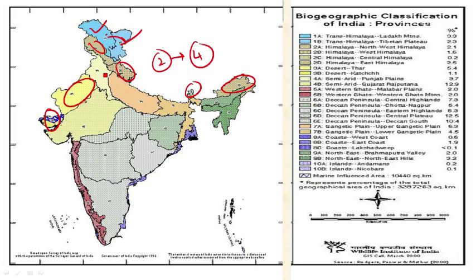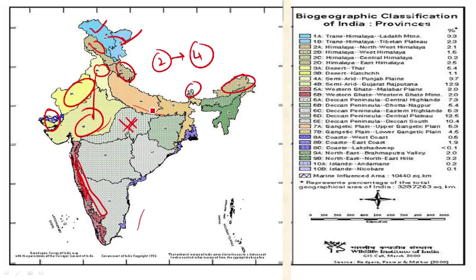The Semi-arid zone is divided into two provinces: the Punjab Plains and the Gujarat-Rajputana province. The Western Ghats zone is divided into two provinces: the Western Ghats Malabar Plains and the Western Ghats mountains. The Deccan Peninsula zone is divided into five provinces: Deccan Peninsula Central Highlands, Deccan Peninsula Chota Nagpur Plateau, Deccan Peninsula Eastern Highlands, and Deccan South.